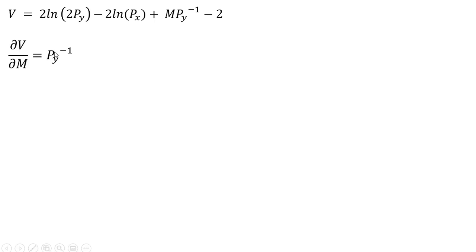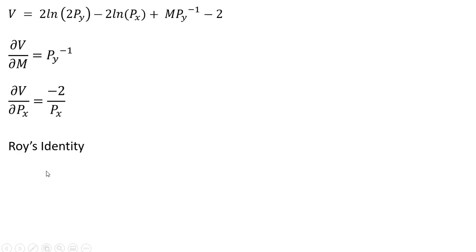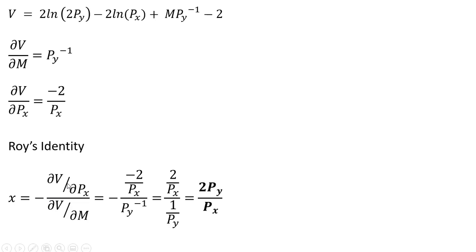Now we're going to take a couple of partial derivatives. Taking the partial derivative of the indirect utility function with respect to the price of good x, the partial derivative of minus 2 times the natural log of p_x gives us this result. Roy's identity tells us that the demand for good x is the ratio of these partial derivatives — don't forget the minus sign — minus the partial of v with respect to p_x, divided by the partial of v with respect to m. Making our substitutions and simplifying, we get the demand for good x.